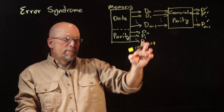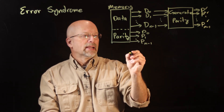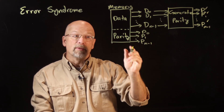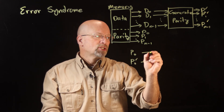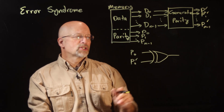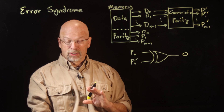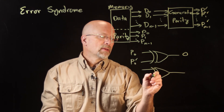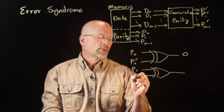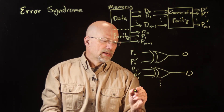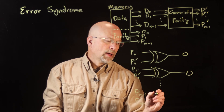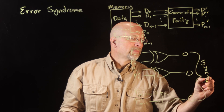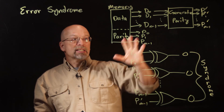Those newly calculated bits are compared with the stored parity bits. We compare P0 with P0 prime — they should be the same if the data and parity haven't changed. We run these through an exclusive OR: if the bits are the same, we expect a zero coming out. We do the same for each parity bit: P1 with P1 prime, all the way down to P sub M minus 1 with P sub M minus 1 prime. This output is the syndrome, and that is what we look at to see what changed.